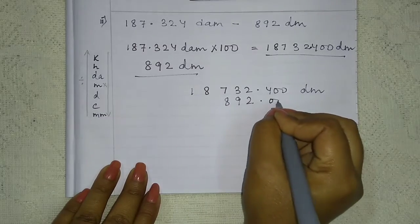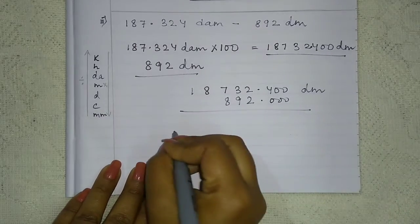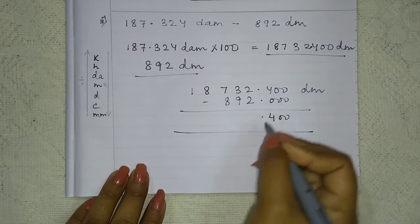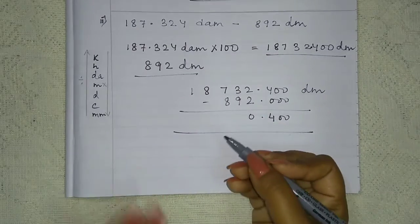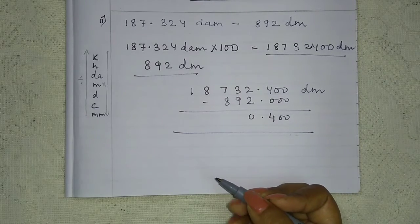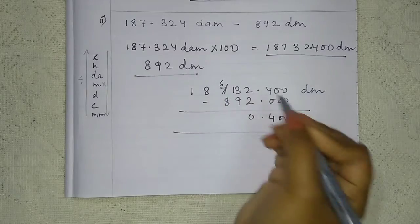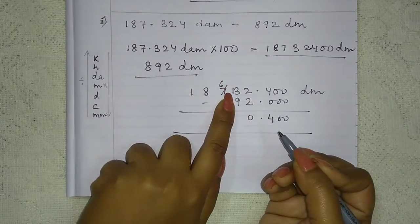There is nothing below, means we can put the point, zero, zero. Okay? Now subtract it. See this, subtract. Zero minus zero is zero. Nine can be subtracted by three? No. So for that, what we have to do, we have to borrow. It will be 6, and this will be 13.